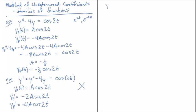And when I plug those in, I get yp double prime plus yp prime minus 4yp is going to be equal to minus 4A cos 2t plus, oh no, minus 2A sine 2t, and then minus 4 times A, sorry, times yp, which is A cos 2t.